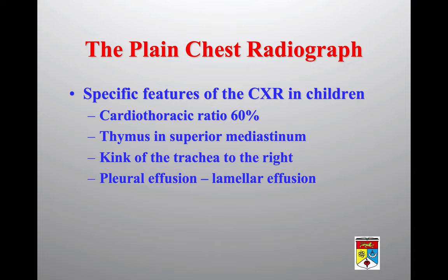There are specific features unique to children on chest radiograph. The cardiothoracic ratio is taken at 60%. The thymus is still present during childhood and can be seen in the superior mediastinum on chest radiograph. When a child takes a deep inspiration, the trachea will deviate to the right — a normal finding in children. When identifying pleural effusion in children, it most often appears as a lamellar effusion.